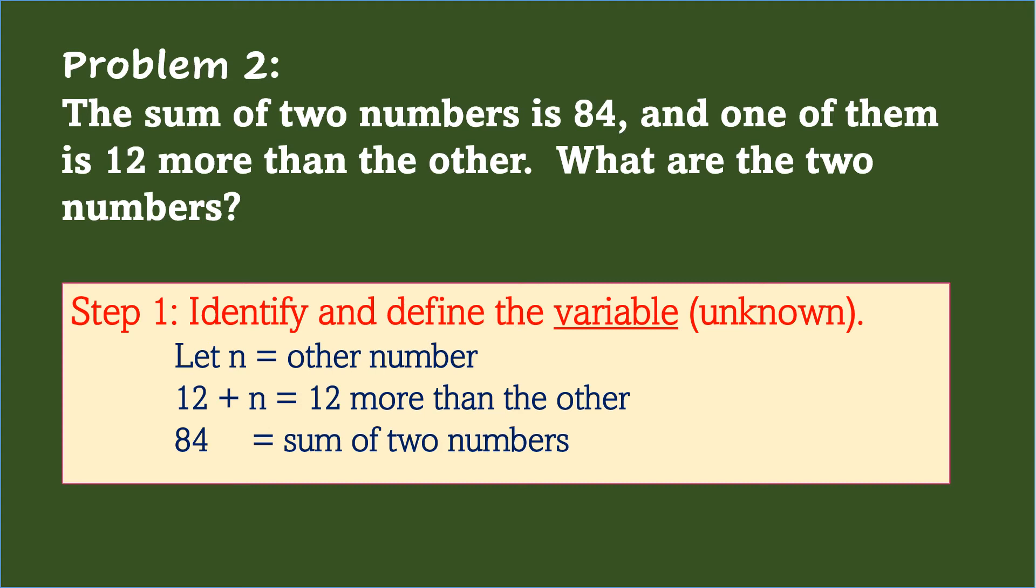The first step is to identify and define the variable, which is the unknown. In the given problem, the two numbers are missing, and we don't know what those two numbers are, so let n be the other number. Meanwhile, one number is given, which is 12 more than the other, and for that, we will use 12 plus n, and 84 as the sum of two numbers.